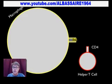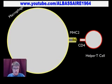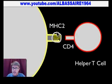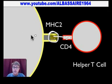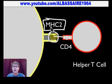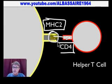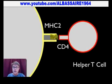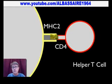Now we have our helper T cell. The helper T cell is going to receive that shape. The protein inside the macrophage that carries the antigen surface to its own surface is called MHC2 — major histocompatibility complex 2. It's then going to link up with CD4, which is another protein on the surface of the helper T cell. So there will actually be a connection between those two cells, and what it's really sending is the shape of that antigen to the helper T cell.